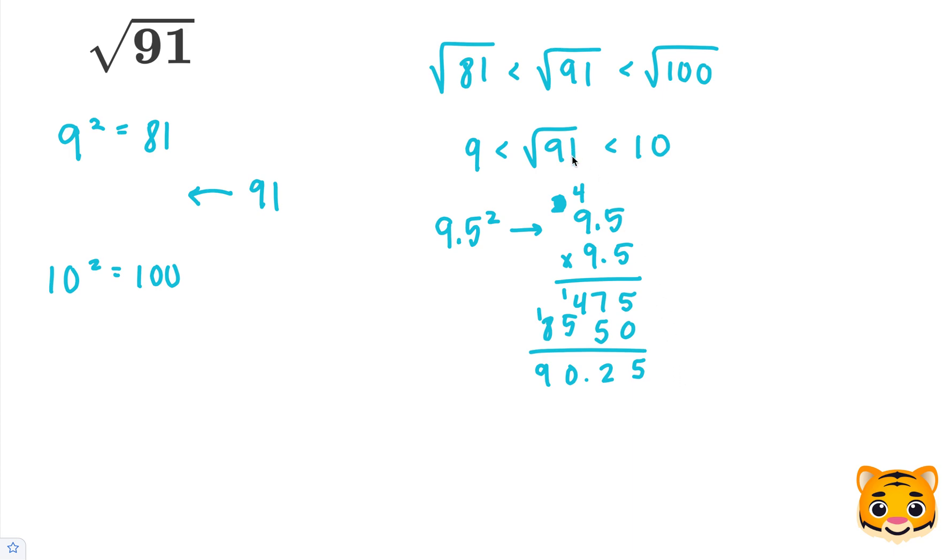This is very close to 91, but we can try out 9.6 squared, or 9.6 times 9.6, to see if we can get ourselves closer.